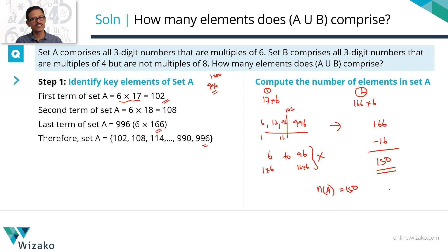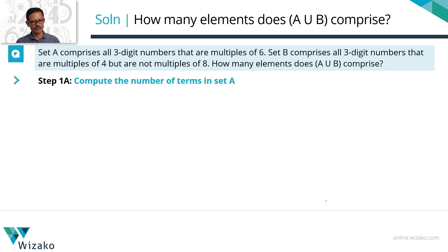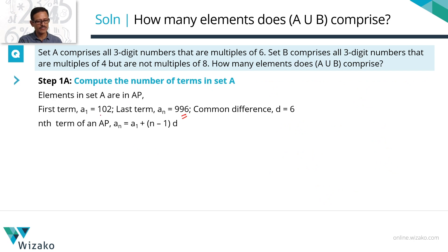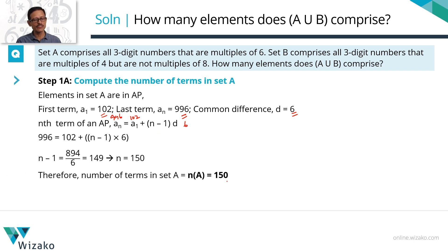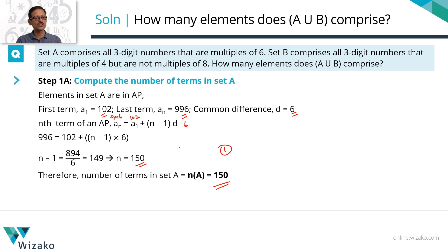Alternatively, just use the arithmetic progression formula. All terms in Set A form an AP with common difference 6. Using Aₙ = A₁ + (n−1)d: last term 996 = 102 + (n−1)×6. Solving this one equation with one variable gives n = 150. So the number of terms in Set A is 150. You can use either method — the multiple-counting approach or the AP formula.